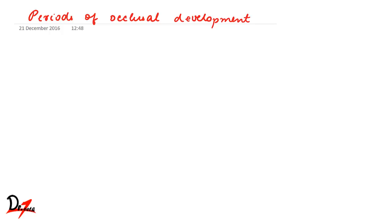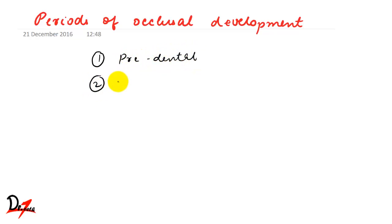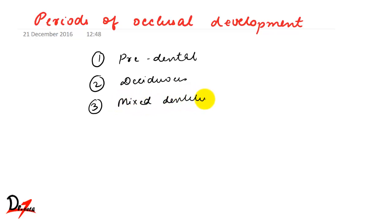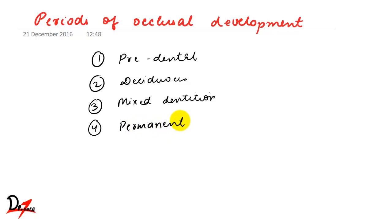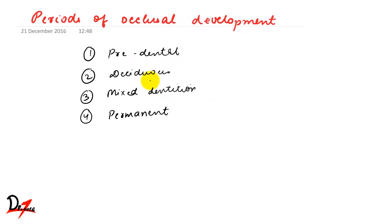Today we will be studying about periods of occlusal development. Occlusal development can be divided into four periods: the pre-dental period, the deciduous dentition period, the mixed dentition period, and the permanent dentition period. These divisions are made on the basis of what teeth erupt and what milestones we are reaching.